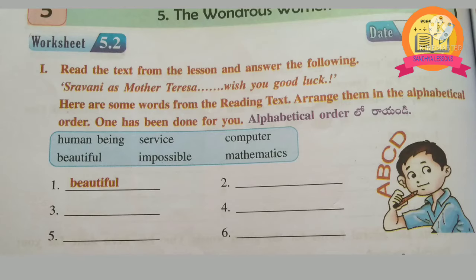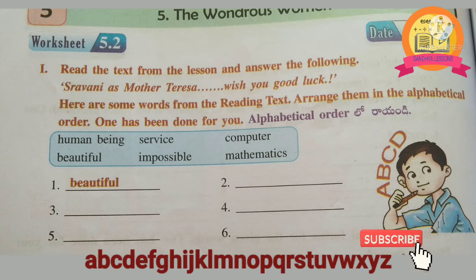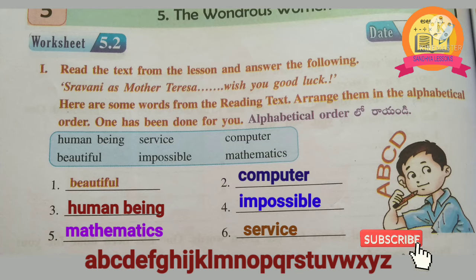Worksheet 5.2, 1st Roman: read the text from the lesson and answer the following. Here are some words from the reading text. Arrange them in alphabetical order. One has been done for you. Children, we should arrange the given words in alphabetical order: beautiful, computer, human being, impossible, mathematics, service.